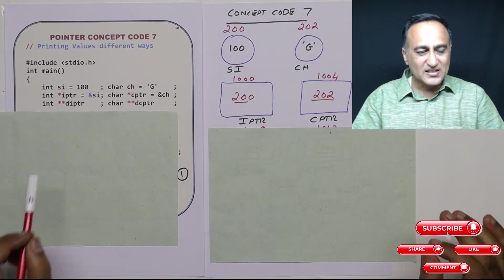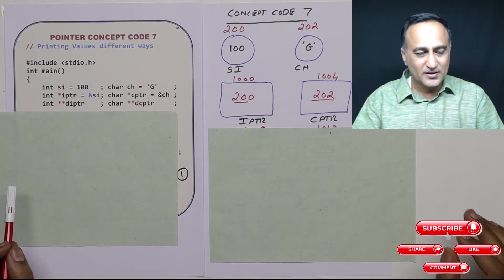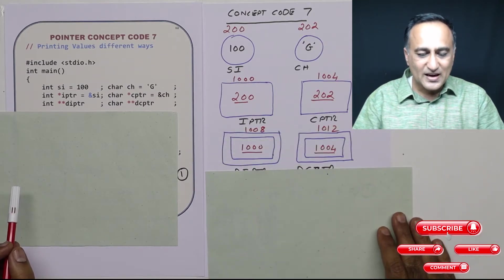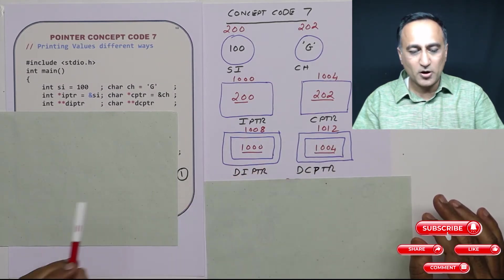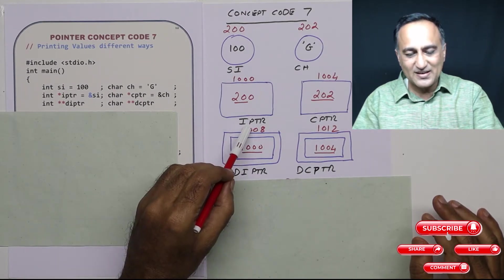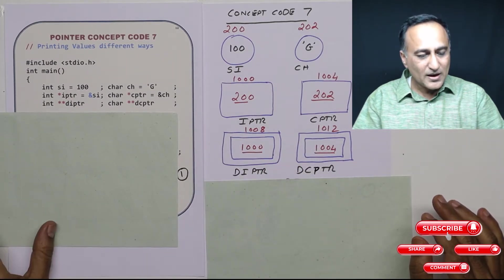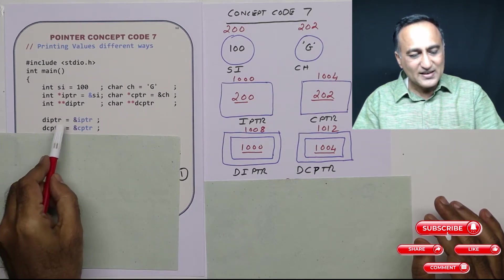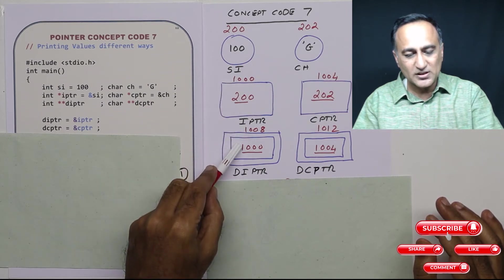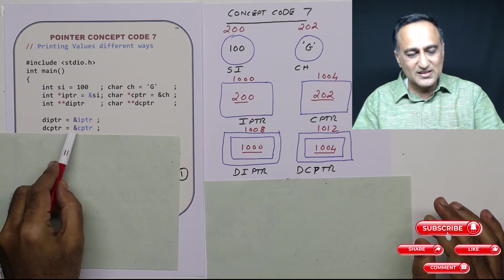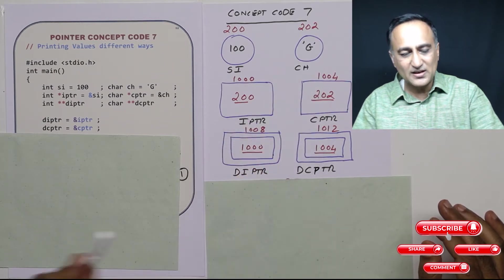In the next line, I have a pointer to a pointer — one of the integer type and one of the character type. So DIPTR is shown with a double box and exists at address 1008. DCPTR exists at address 1012. DIPTR is containing the address of IPTR, which is 1000. DCPTR is containing the address of CPTR, which is 1004.